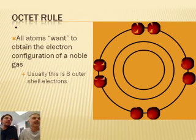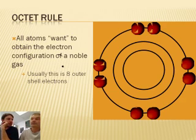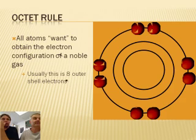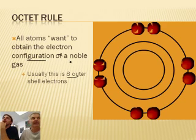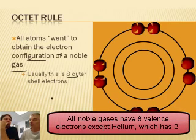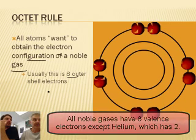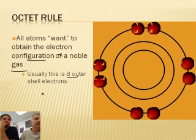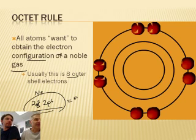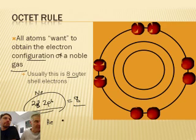That leads us to something called the octet rule. We were talking about all the octo things at the beginning — octo just means eight. Like if you sing in an octet, there are eight people in your group, and an octave has eight notes. Atoms want to have the same electron configuration as a noble gas. Almost all noble gases, except one, have eight valence electrons. The exception is helium, because helium only wants two. Neon, for example, has an outer electron configuration of 2s² 2p⁶ — and if you add those up, that adds up to eight.